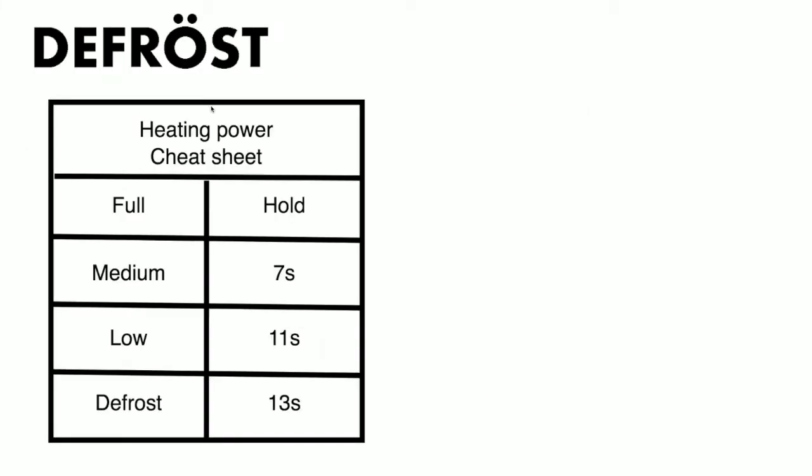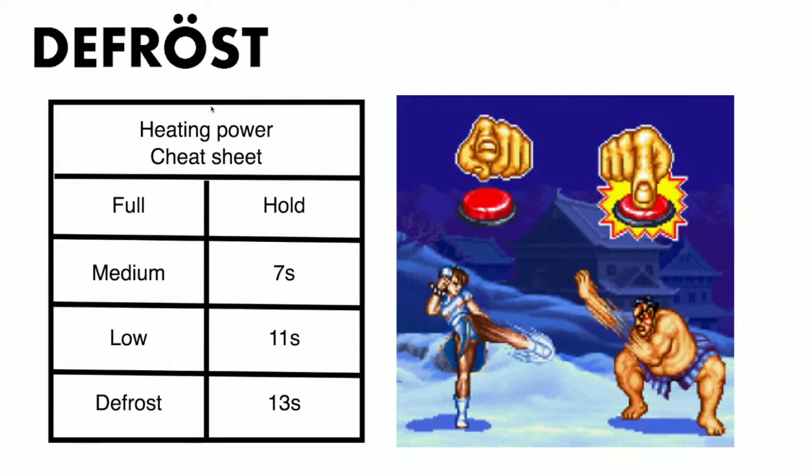The KitchenWater 3000 is made to heat food at light speed, but it can also defrost food — and to defrost, you need less heating power. Since the magnetron-on heating power cannot be modulated, it has to be turned on and off at a regular pace to generate less heating power. The KitchenWater 3000 comes with handy documentation: to defrost food, you need to hold the magnetron-on button for 13 seconds, then release it for 13 seconds, and so on, as long as necessary. It's like playing a video game — really fun. Well, not at all.